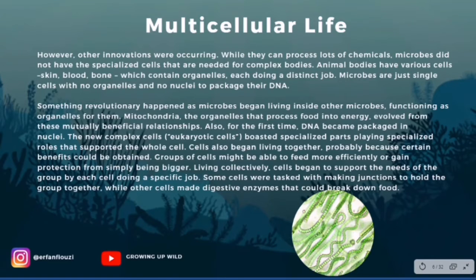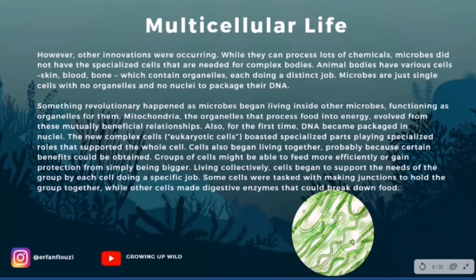Cells also began living together, probably because certain advantages could be obtained. Groups of cells might be able to feed more efficiently or gain protection from simply being bigger. Living collectively, cells began to support the needs of the group by each cell doing a specific job. Some cells were tasked with making junctions to hold the group together, while other cells made digestive enzymes that could break down food. The earliest evidence of eukaryotic cells dates from 1.85 billion years ago, and their diversification accelerated when they started using oxygen in their metabolism. Around 1.7 billion years ago, multi-celled organisms began to appear with differentiated cells performing specialized functions.